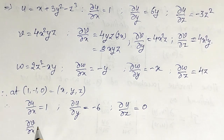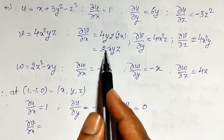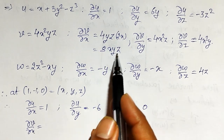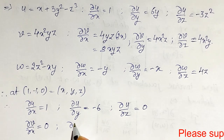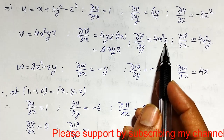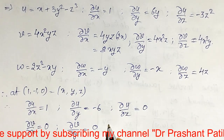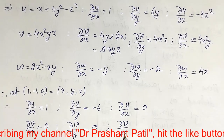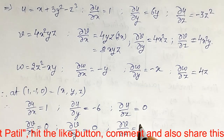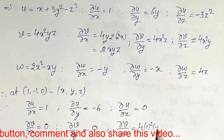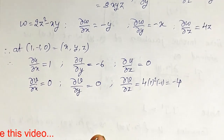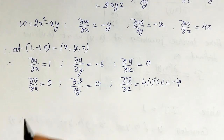For v at the point (1, -1, 0): ∂v/∂x = 8xyz — but z = 0, so this whole term becomes 0. ∂v/∂y = 4x squared z — again z = 0, so this also becomes 0. ∂v/∂z = 4x squared y = 4 times 1 squared times (-1) = -4.